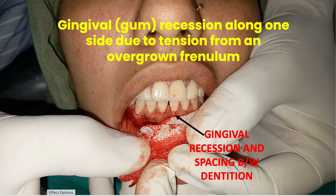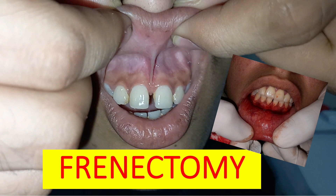The second most common problem due to a high labial frenum is gingival recession and spacing between the dentition. A high labial frenum creates tension on the gums, which causes gingival recession. So gum recession along one side is due to the tension from an overgrown frenum. I hope this video is useful for you to understand what frenectomy is and why we need to do it.